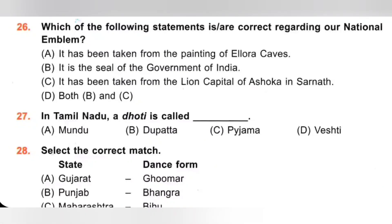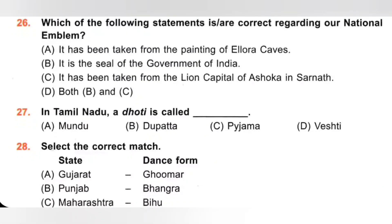27th. In Tamil Nadu, a dhoti is called: A. Veshti, B. Paijama, C. Dhoti, D. Mundu. In Tamil Nadu, a dhoti is called Veshti. Option D is the correct answer.